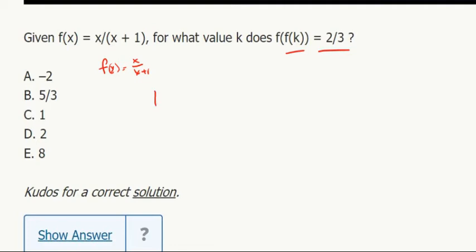f of k would be k over k plus 1. And then it's like f of that. So k over k plus 1 becomes the x. So f of f of k is k over k plus 1, over k over k plus 1 plus 1.